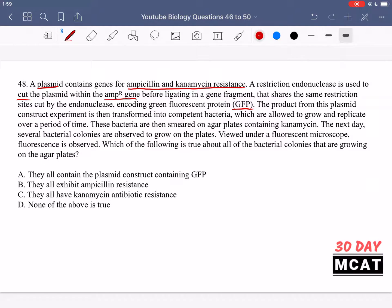So what we did is we took a plasmid, which is resistant to ampicillin and canamycin, we replaced where it was resistant to ampicillin with GFP, and then we gave it to some competent bacteria, they were allowed to grow and replicate, and then we put them on agar plates containing canamycin, and then colonies were observed, and then fluorescence was also observed. We're asked which of the following is true about all of the bacterial colonies. So this is the keyword here, all of them.